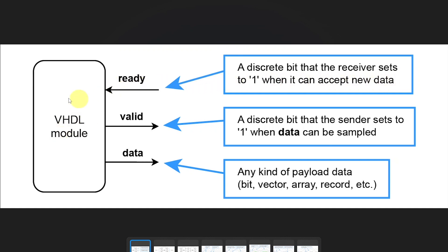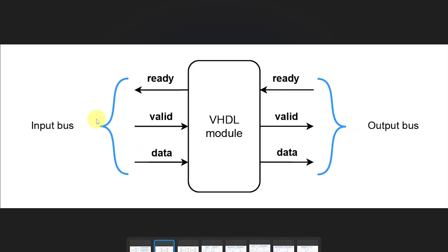The receiver, which the sender is sending data to, can control the ready signal and set it to 0 or 1. If it's 0, it means the receiver is not ready to accept data. If it is 1, it means it will accept the data on the data bus. The valid signal is the sender's output to the receiver, and when it is 1 it means the data can be sampled. The data on the data bus can be sampled only when valid is 1. A VHDL module may have input buses or output buses, or both at the same time if it is receiving and sending data.